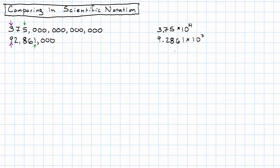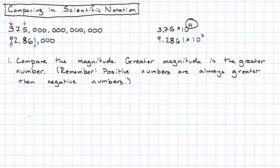Okay, looking at these numbers then, how do we know that the first one is bigger? Well, it has a larger magnitude. Now there's only one thing tricky about remembering that the greater magnitude is the greater number, and that is that we have to remember that positive numbers are always greater than negative numbers.